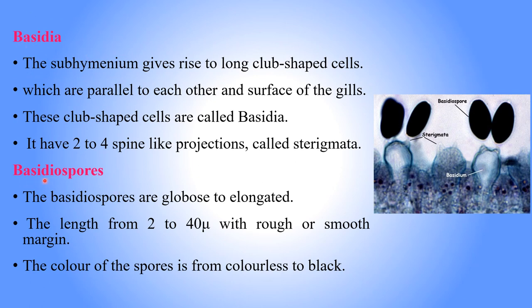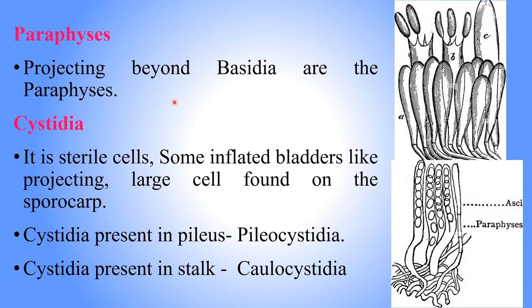The basidia and basidiospores are located inside the gills. In the basidia, the subhymenium tissue gives rise to long club-shaped cells that lie parallel to each other on the surface of the gills — these are called basidia. Each basidium has two or three spine-like projections called sterigmata. Basidiospores are globose to elongated in shape, ranging from 2 to 40 microns in length, with rough or smooth markings, and vary in color from colorless to black.